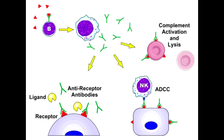Give an example of Type 2 Hypersensitivity Reaction. An example is incompatible blood transfusion. Basically, the antibodies will react with the incompatible blood, leading to lysis of those cells.